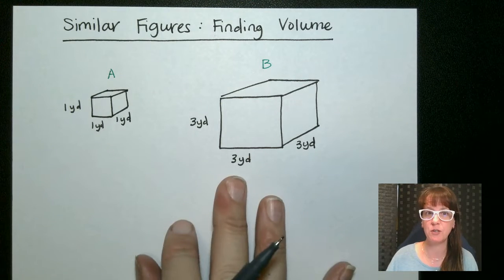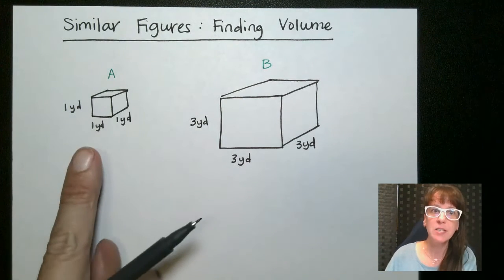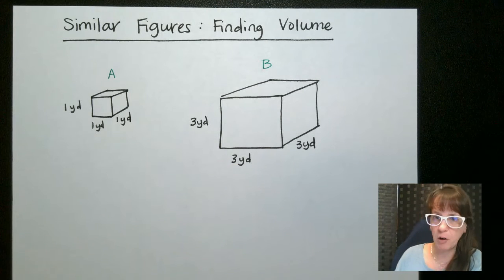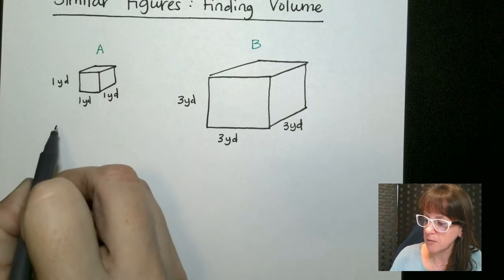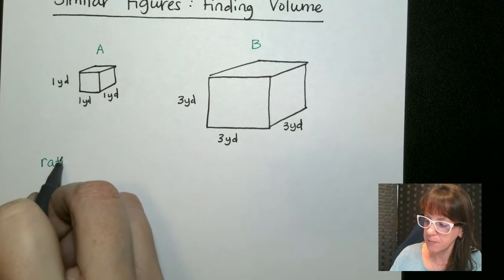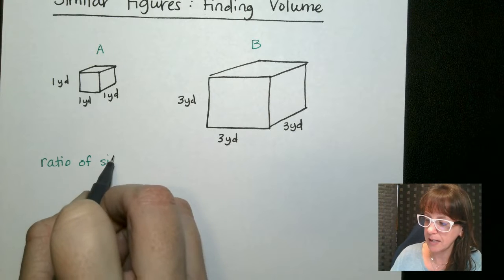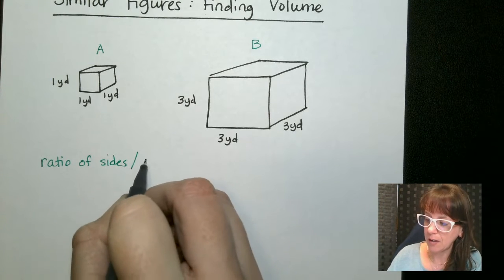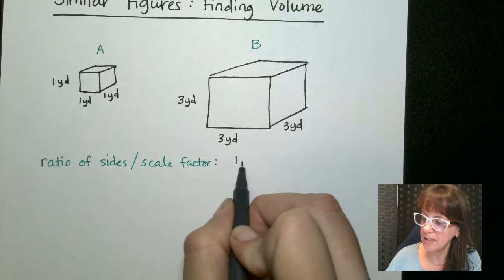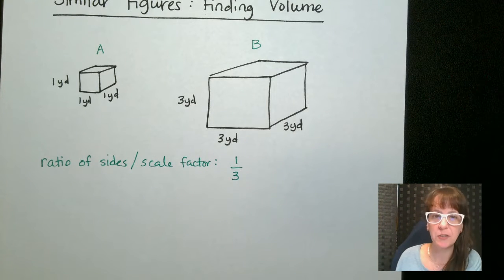So first let's look at these two. I have two cubes here. This one is a 1 by 1 by 1, this is a 3 by 3 by 3. And I want to find the volume of those. First let's do this. We know that the ratio of the sides, aka our scale factor, is 1 to 3.